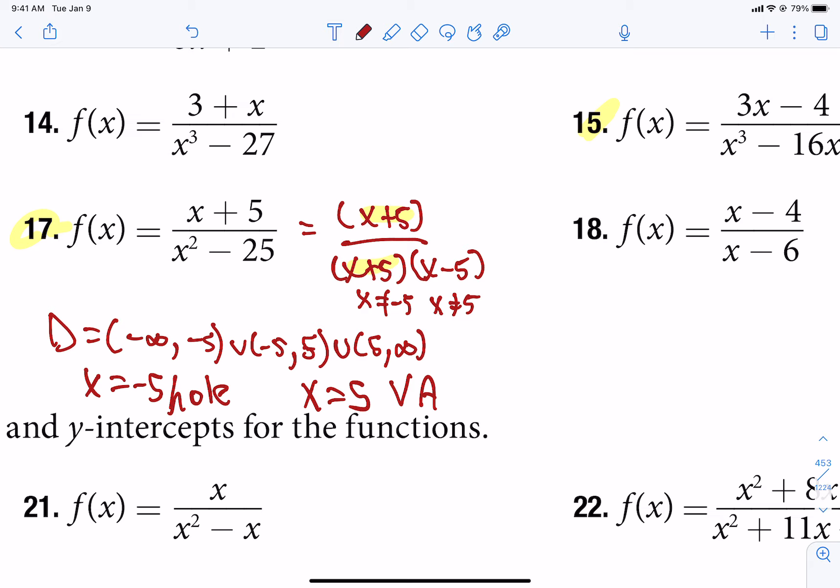And then the other question was, what was the horizontal asymptote? Well, if the power on top is less than the power on the bottom, see that degree is higher in the bottom, the horizontal asymptote is always 0.